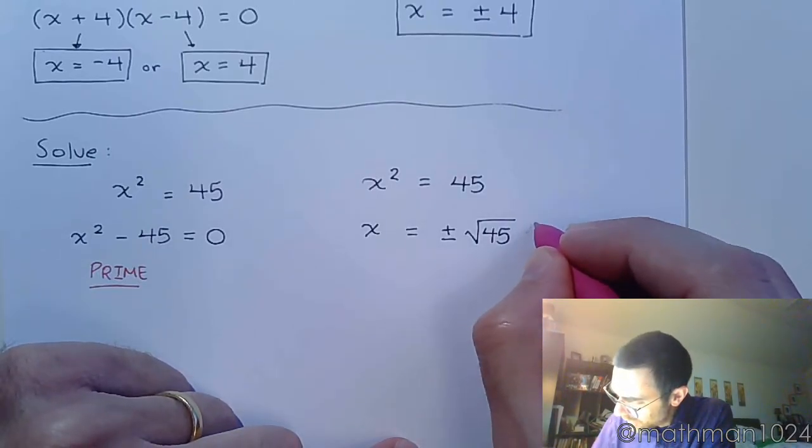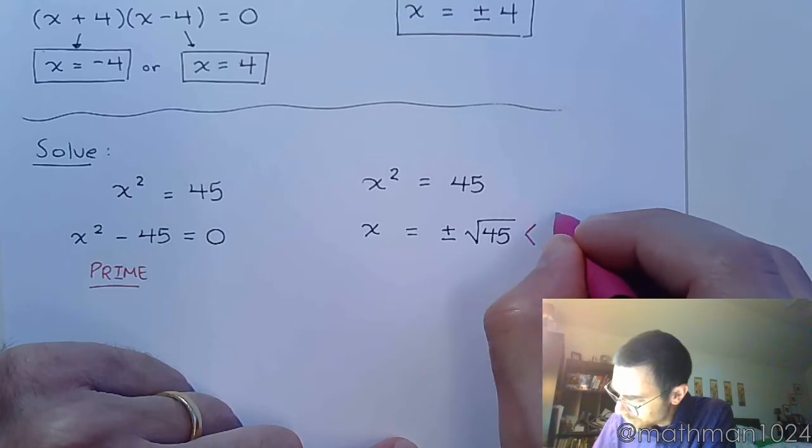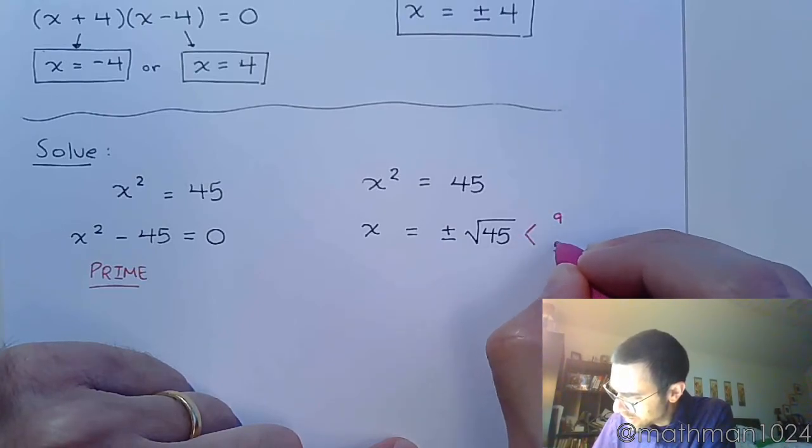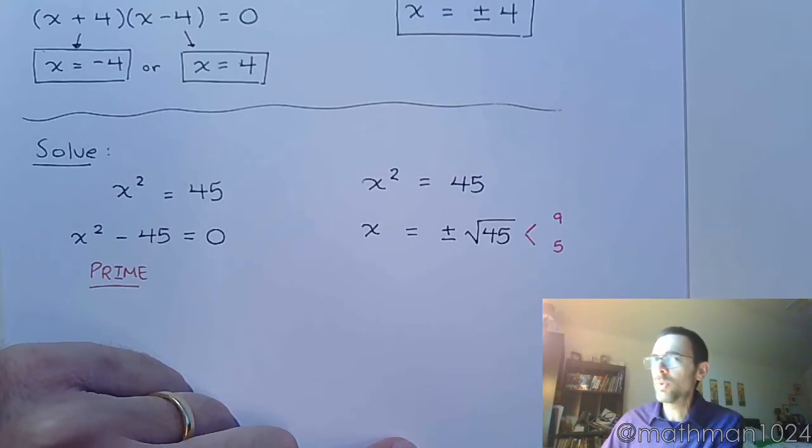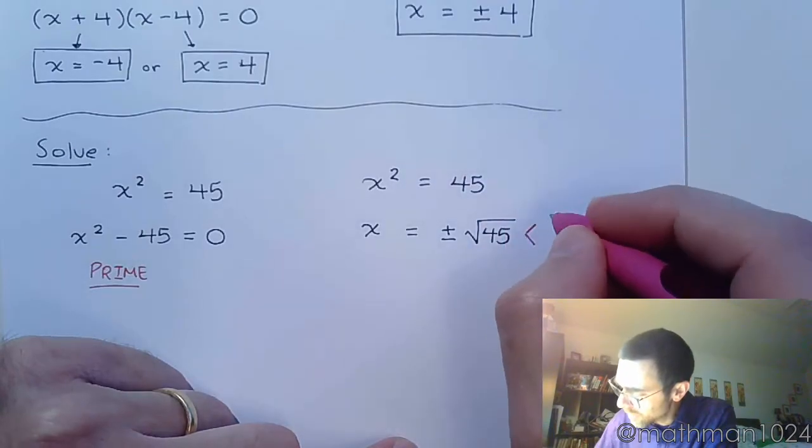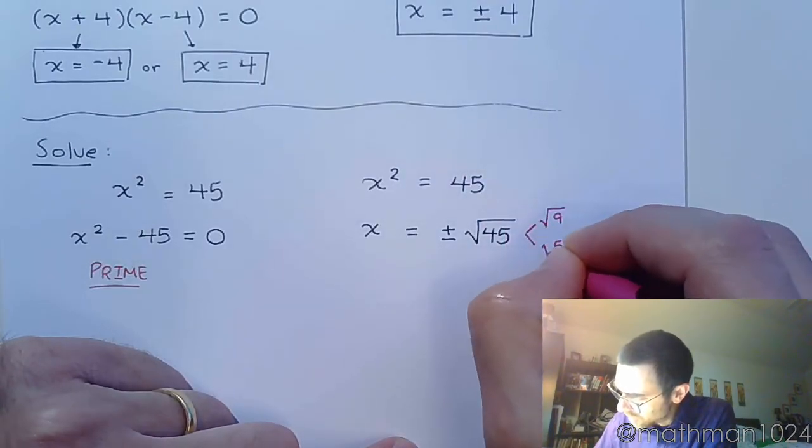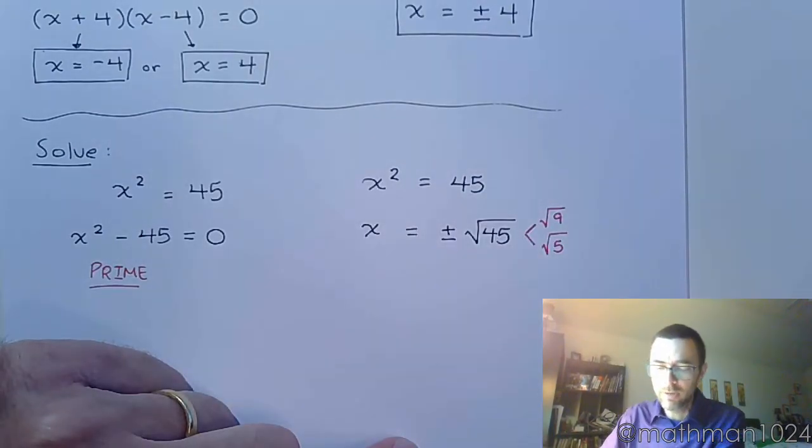And we know that 45 can break down to be 9 times 5, like that. That's not the only way to break it down, but it is the best way so that we can see a perfect square that's a factor. So each of these is really inside of its own square root.